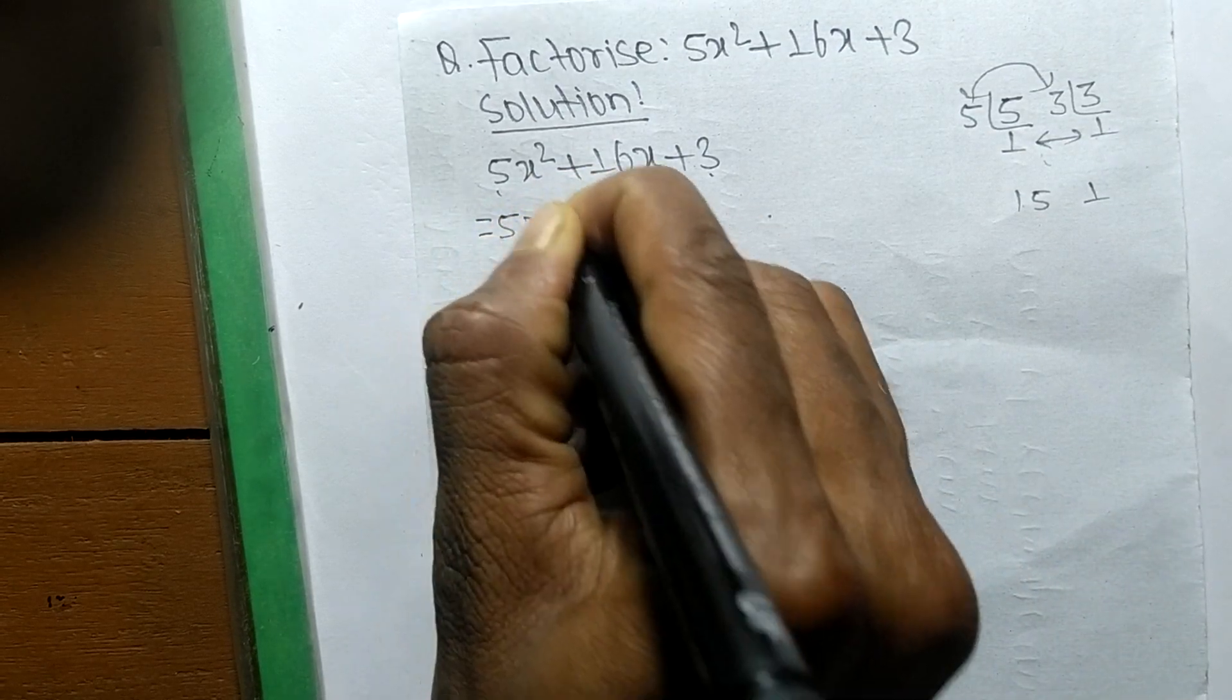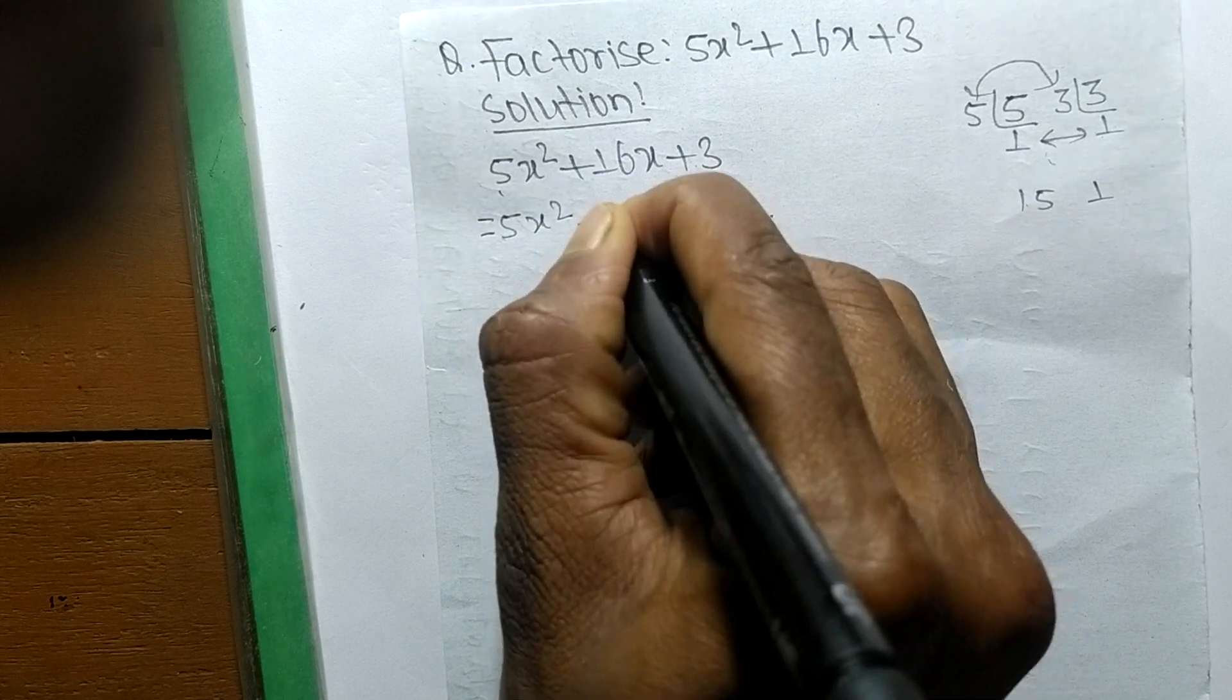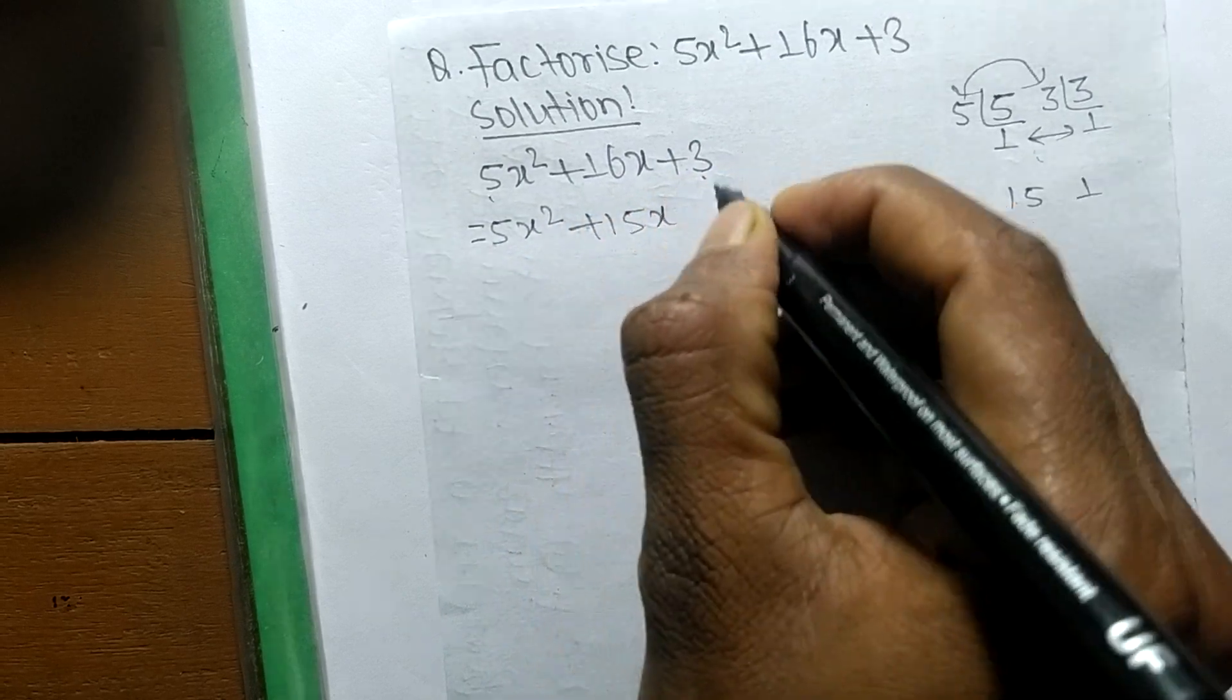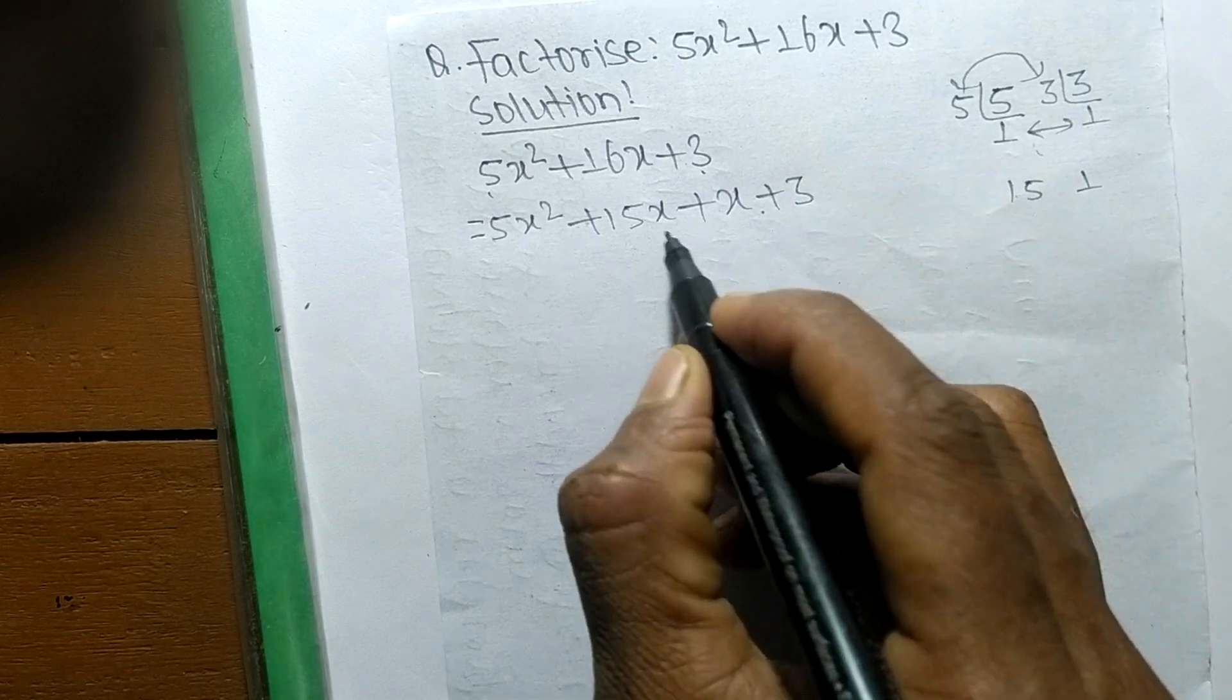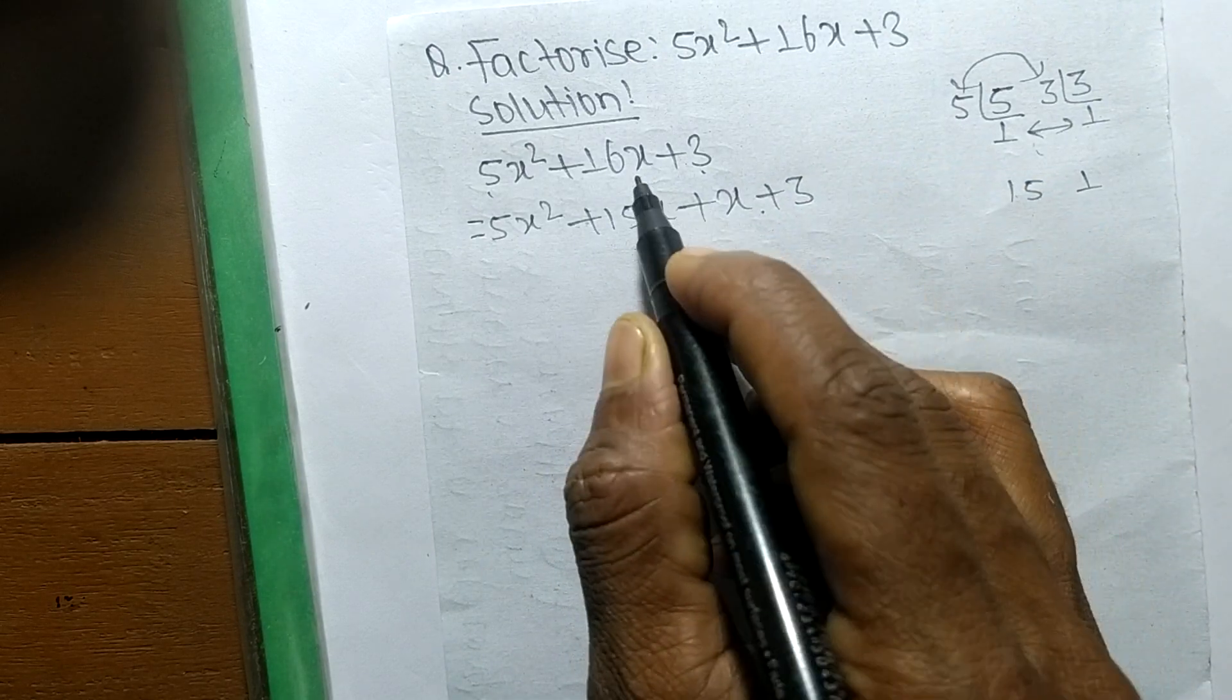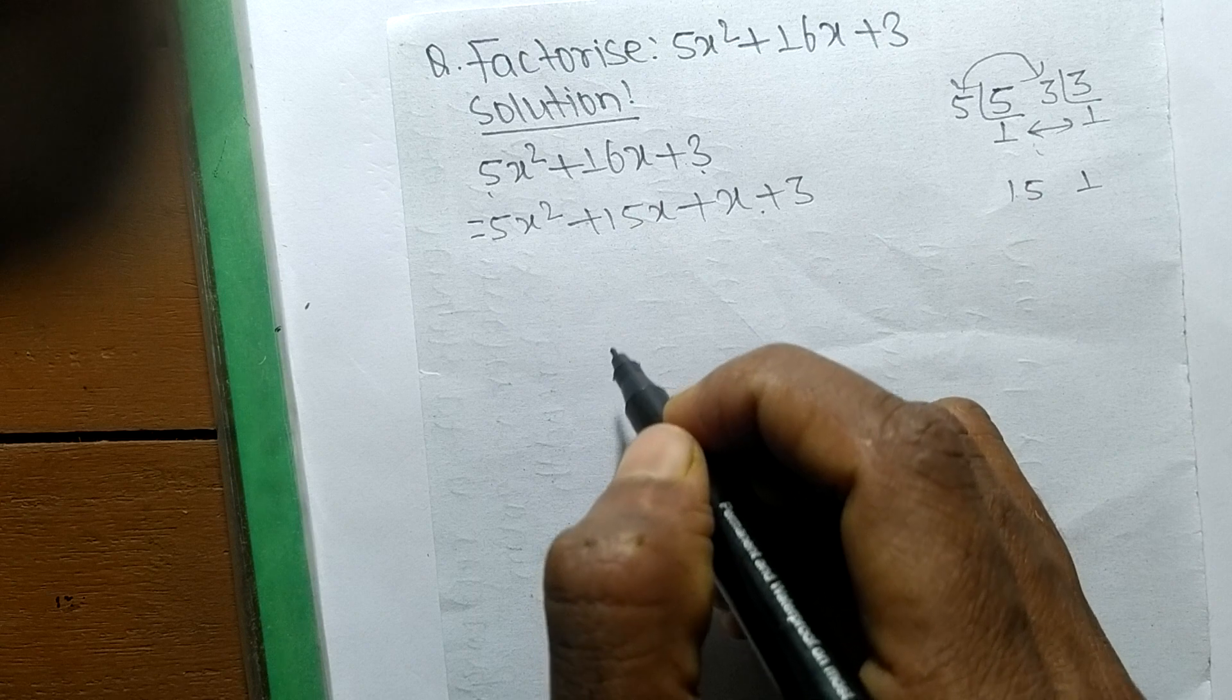So we can write it as 5x² + 15x + x + 3. 15x + x means it is 16x.